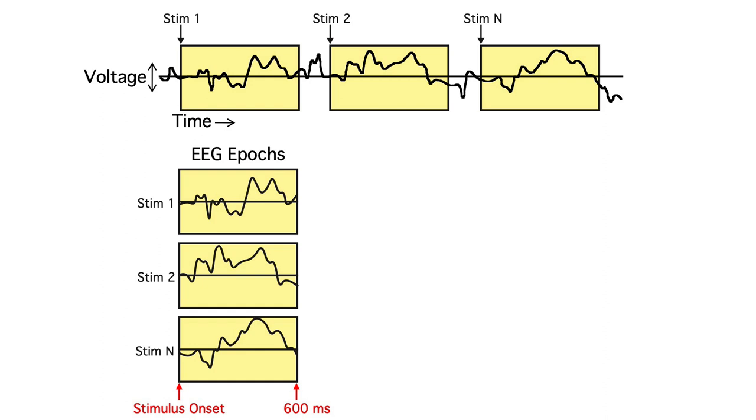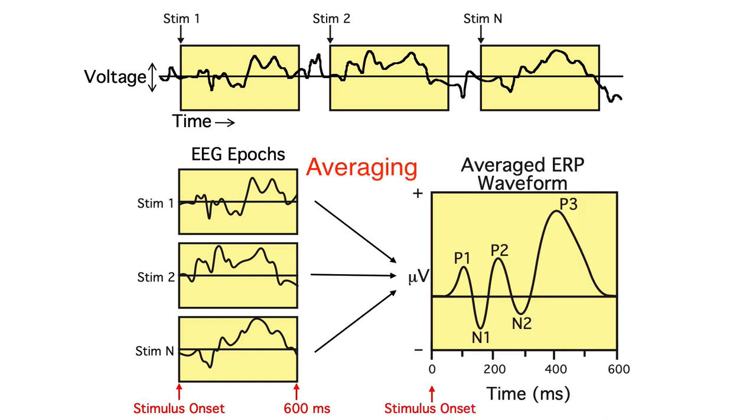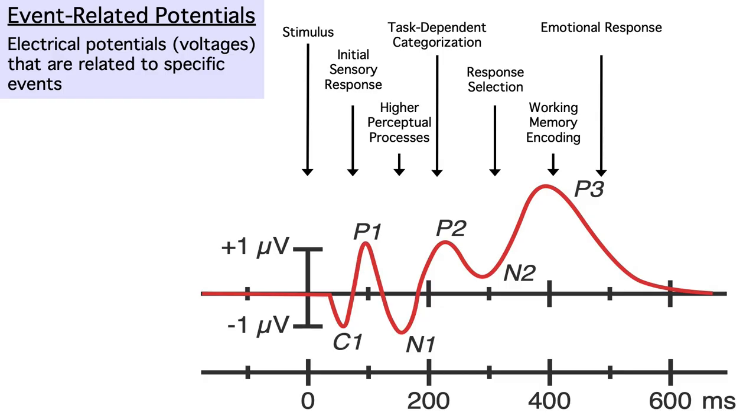To pull out the brain's consistent response to some type of event, we can simply average across the epochs for that event type. When we average across enough epochs, any activity that's consistent from trial to trial remains in the average, and any random noise simply averages out. This gives us an averaged ERP waveform.